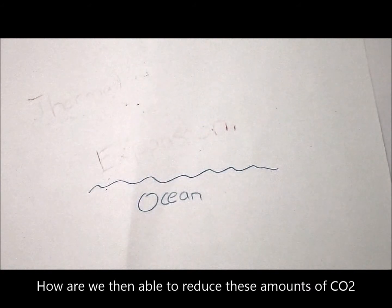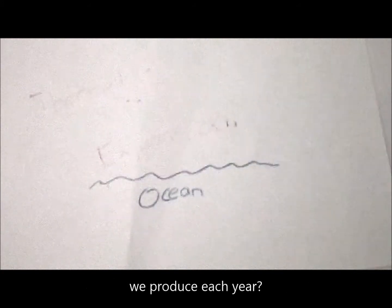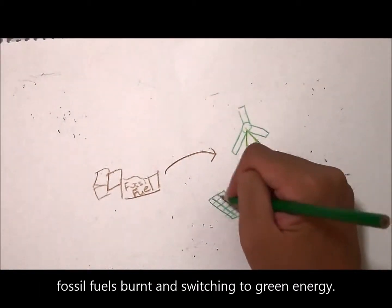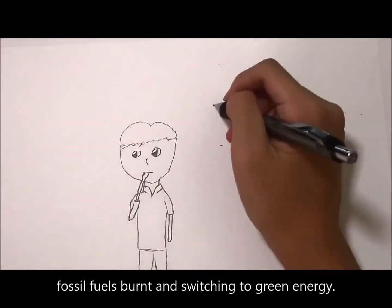How are we then able to reduce these amounts of CO2 we produce each year? Reduction of CO2 can be done by reducing the amount of fossil fuels burned and switching to green energy.